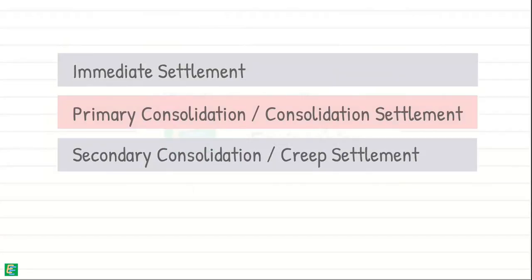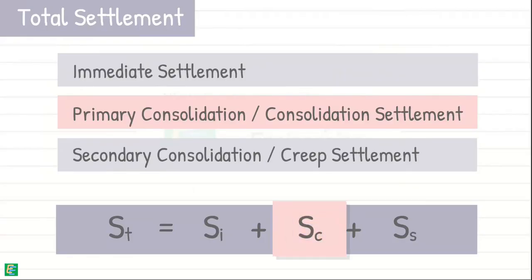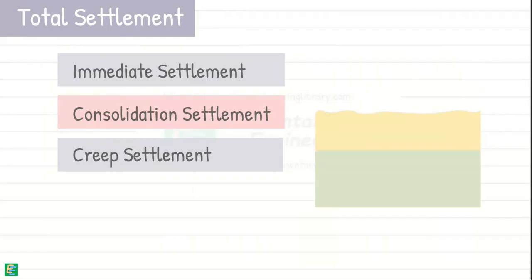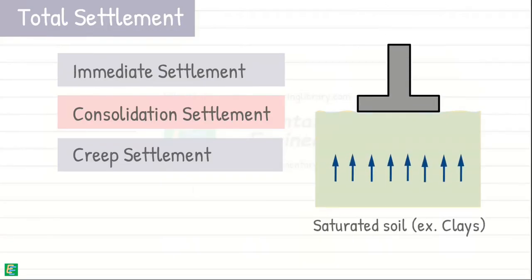Primary consolidation, or consolidation settlement, is the most important component of the total settlement. It contributes the most significant portion of the total settlement. This is especially true for fine-grained saturated soils like clay, where excess pore water expulsion plays a major role. So we are going to study it in more detail in our coming videos.